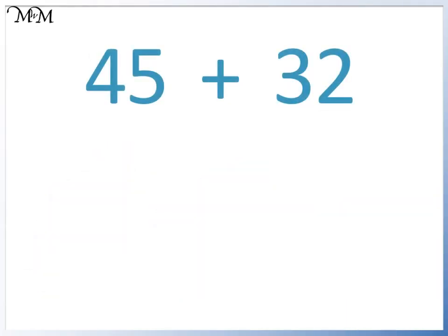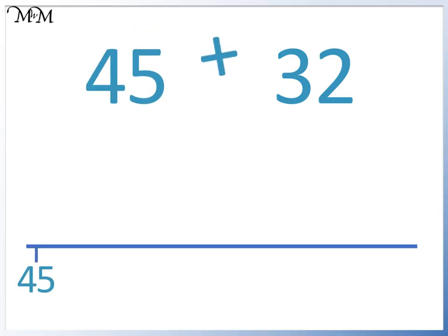Here is 45 plus 32. We draw our number line and label the biggest number, 45, on the left. We add 3 tens.